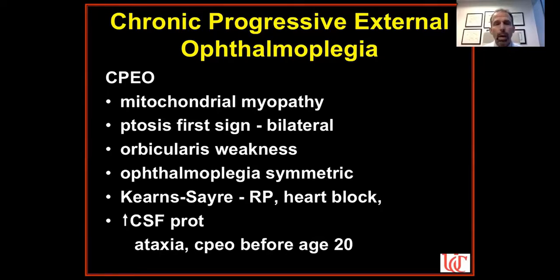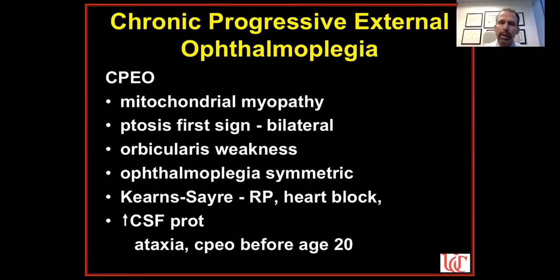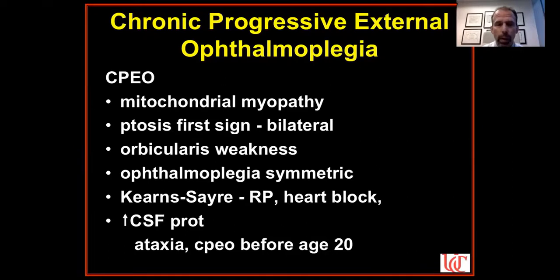I saw a patient recently who came for a second opinion, diagnosed with CPEO, and I asked whether the neuro-ophthalmologist had ordered an EKG. They said no, but a prior EKG from a minor surgical procedure showed a bundle branch block. I told them they had Kearns-Sayre syndrome and needed to see a cardiologist about a pacemaker to prevent serious cardiac problems. These patients may also have increased cerebrospinal fluid protein and ataxia. Classically the patient is a male, but it can occur in females — she did not have Kearns-Sayre.